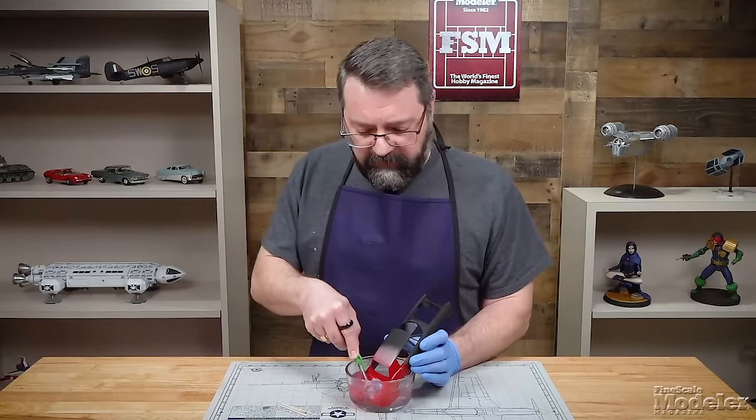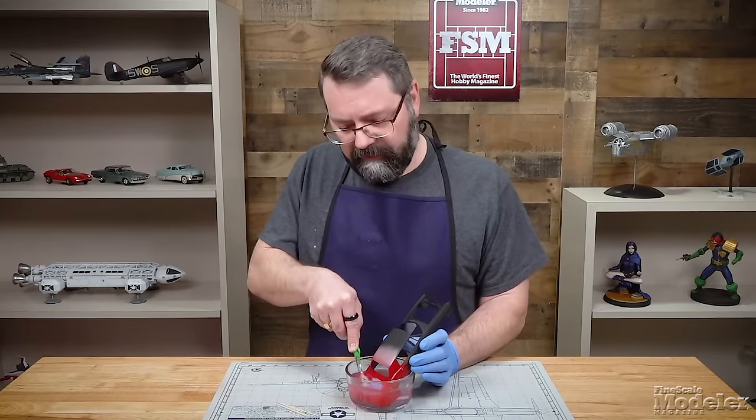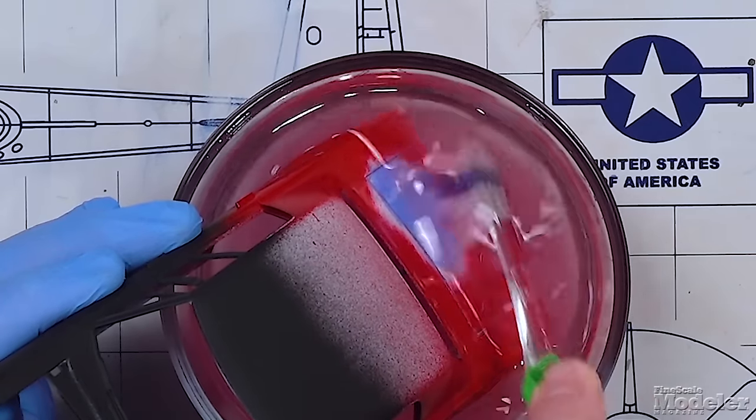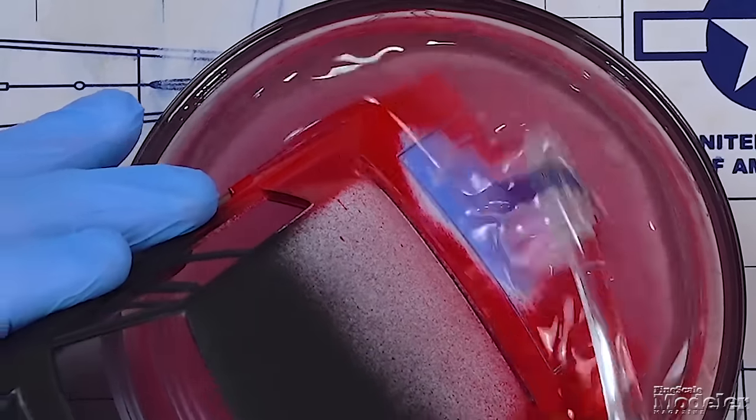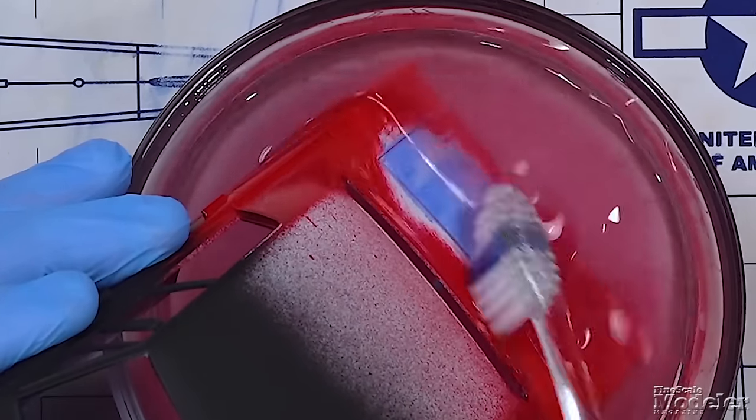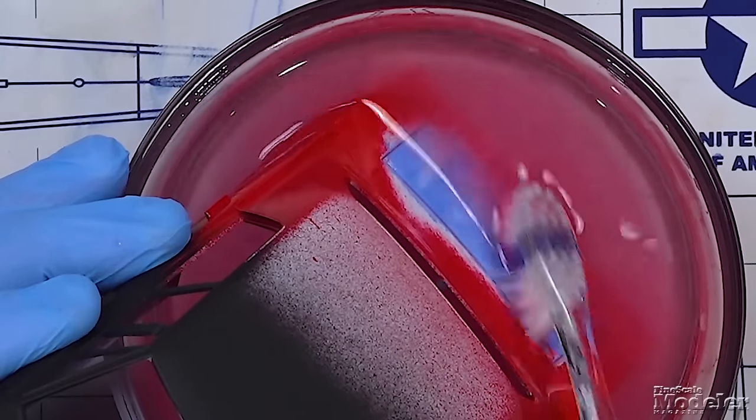Now there are going to be people who say, well I use oven cleaner or any number of other things, and that's fine. But you can use isopropyl alcohol and you can be assured that that alcohol is not going to damage the underlying plastic as you're doing this work.